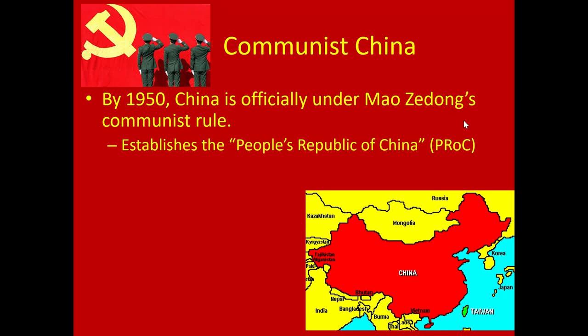The People's Republic of China is still technically the official name for mainland China today. An easy way to remember: whenever you see the word 'people's' in a country's name, it's usually an indicator that it's a communist state — like North Korea's official name, the Democratic People's Republic of Korea. This makes sense because Marxist philosophy was all about people having autonomy and control. But it's ironic, because in practice these countries become either totalitarian or authoritarian and don't give people a real say in their lives.